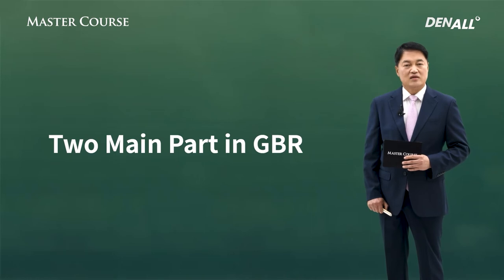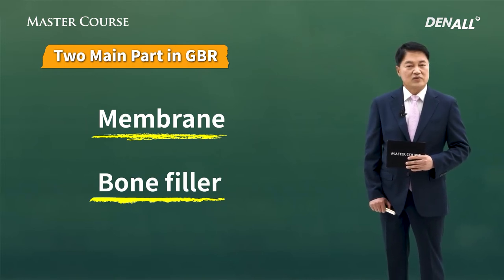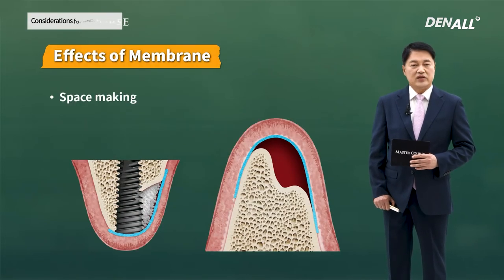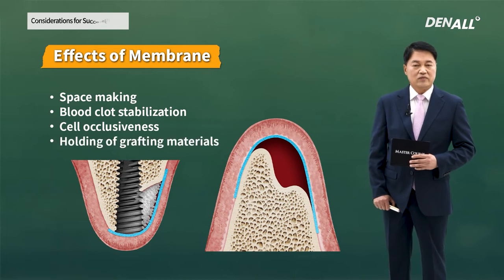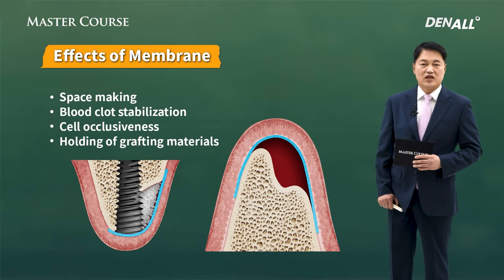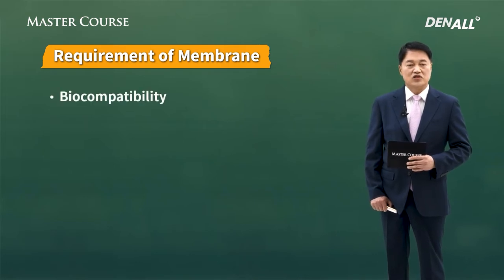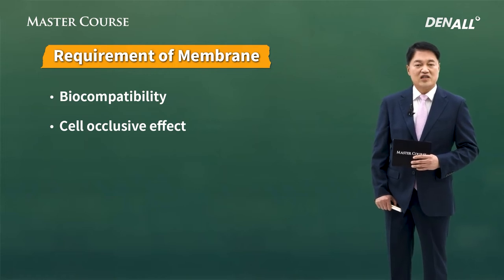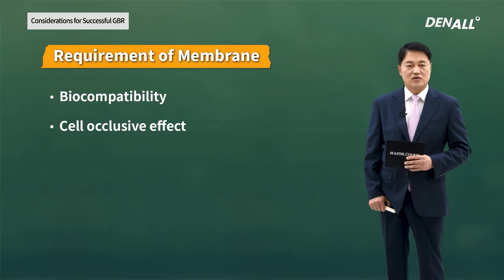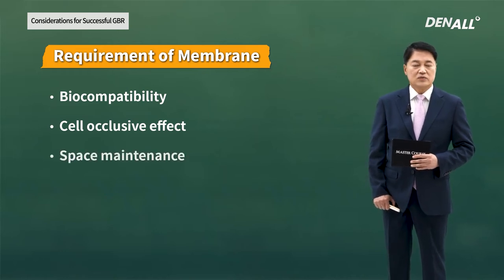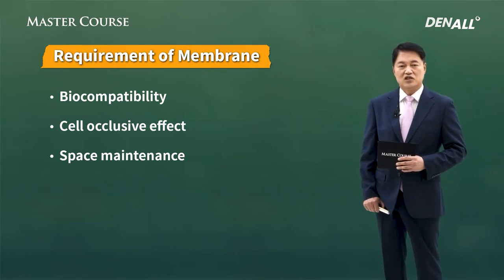The two main parts in GBR can be divided as membrane and bone filler. The membrane's role is to make space, stabilize blood clot, provide cell occlusiveness to prevent epithelial or connective tissue from coming in, and hold graft materials. The requirements of a membrane include biocompatibility, cell occlusive effect to block epithelial and connective tissue, prevention of bacterial exposure if exposed, and space creation and maintenance for bone regeneration.